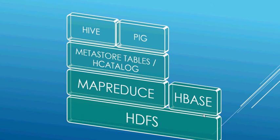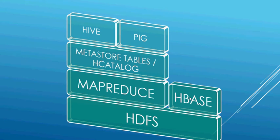Then we have HBase, which is a distributed column-oriented database. The underlying storage of HBase is HDFS. HBase supports both MapReduce Java-based jobs and point queries. You can directly point queries from Hive and Pig to HBase. We will discuss the components of HBase in the next slide.